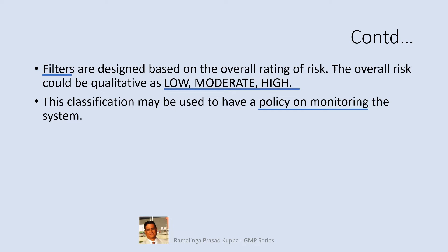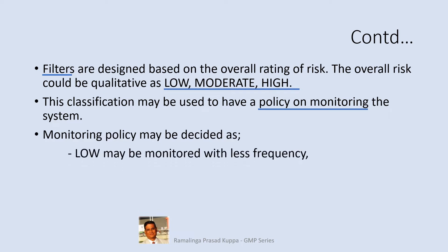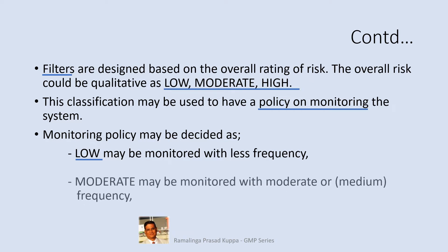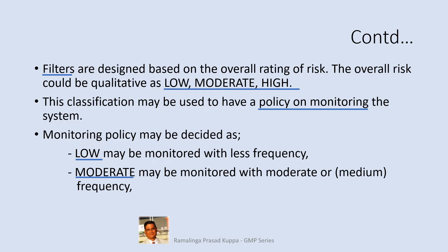For high filter, this is more critical and can have significant impact on the quality of the output if not monitored more frequently. Monitoring policy may be decided as follows: low may be monitored with less frequency, as there is not much criticality — longer frequencies of monitoring may be accepted. Moderate may be monitored with moderate or medium frequency; the frequency may be a little more stringent than the low filter, depending upon the score and impact. High may be monitored more frequently, as it is considered very critical and should have better controls.